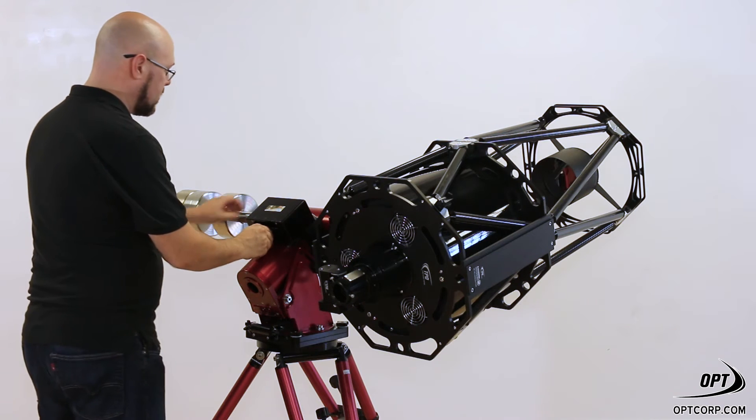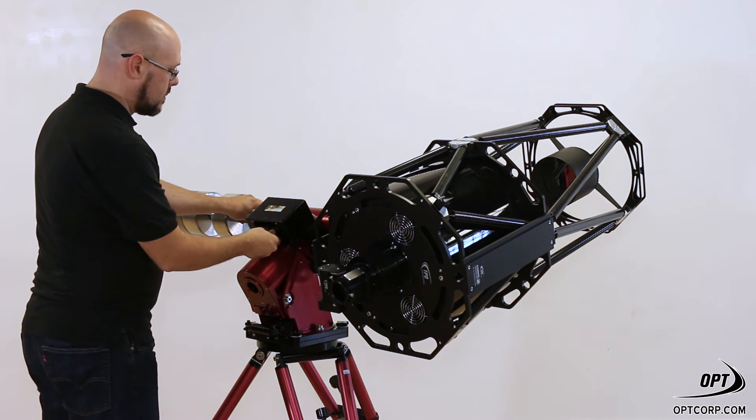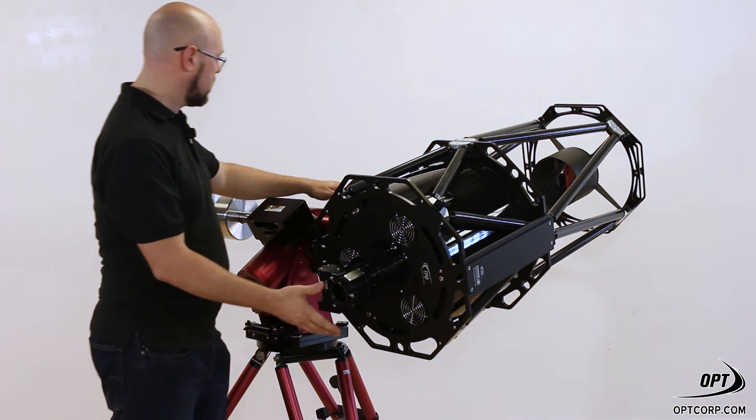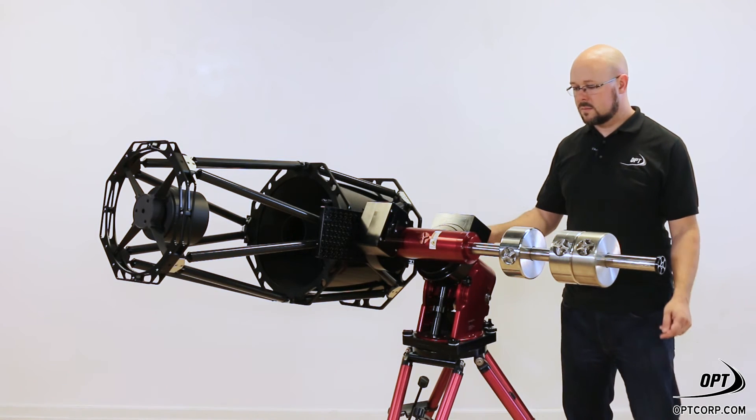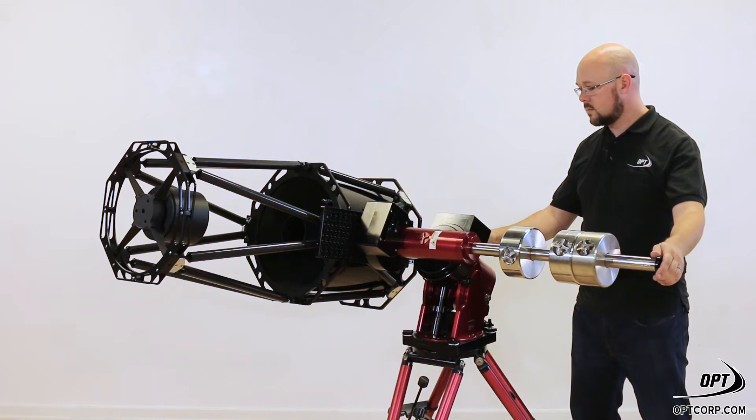Once you've accomplished this, you want to lock the right ascension axis with the telescope in the same position: telescope on its side, counterweight shaft parallel to the ground.